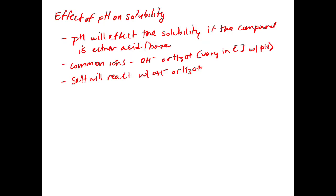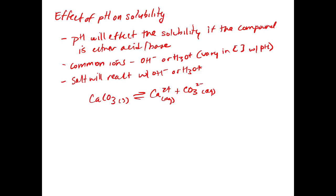Let's look at one example of where this might be the case. If you have calcium carbonate, it's a weakly soluble salt that makes Ca²⁺ plus the carbonate anion in solution. When this dissolves, the Ca²⁺ is essentially neutral, but carbonate is a weak base.